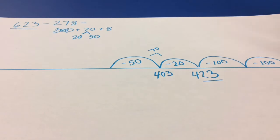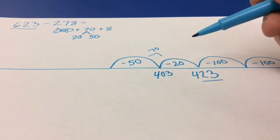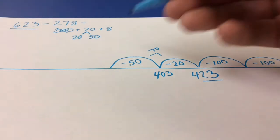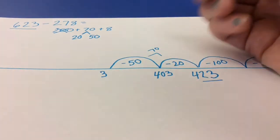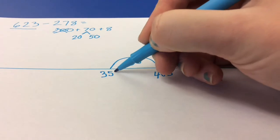And 403, take away 50, well I know that 400 take away 50 is 350. So 403, take away 50, is going to be 400, or 300, and 50, 3.